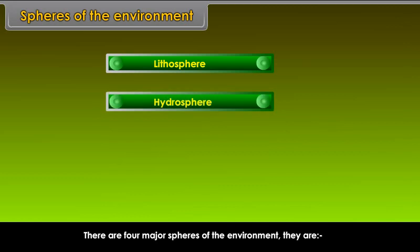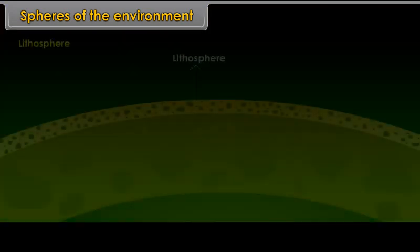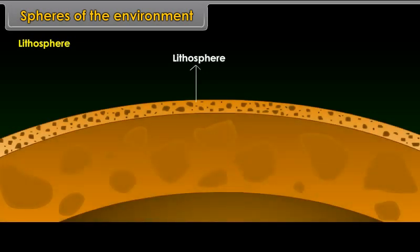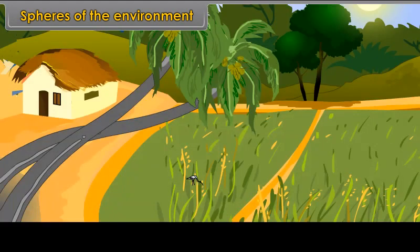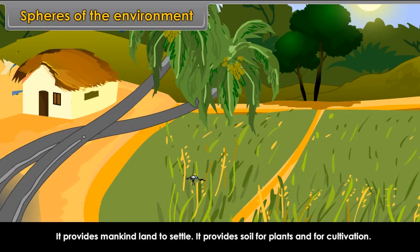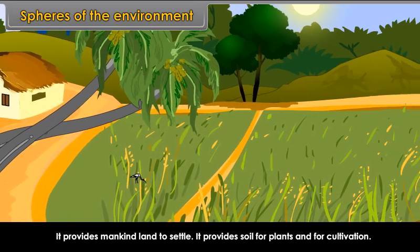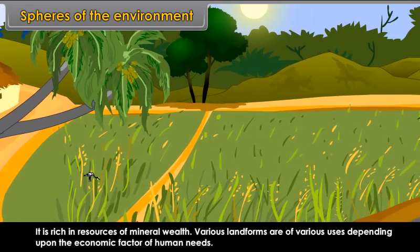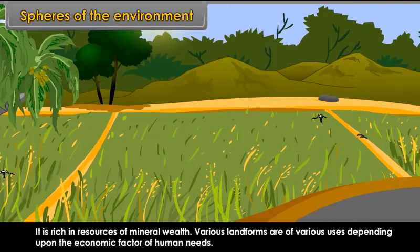Lithosphere. The solid crust of the earth is called lithosphere. The average thickness is about 100 km. Importance of lithosphere: It provides mankind land to settle. It provides soil for plants and for cultivation. It is rich in resources of mineral wealth. Various landforms are of various uses depending upon the economic factor of human needs.